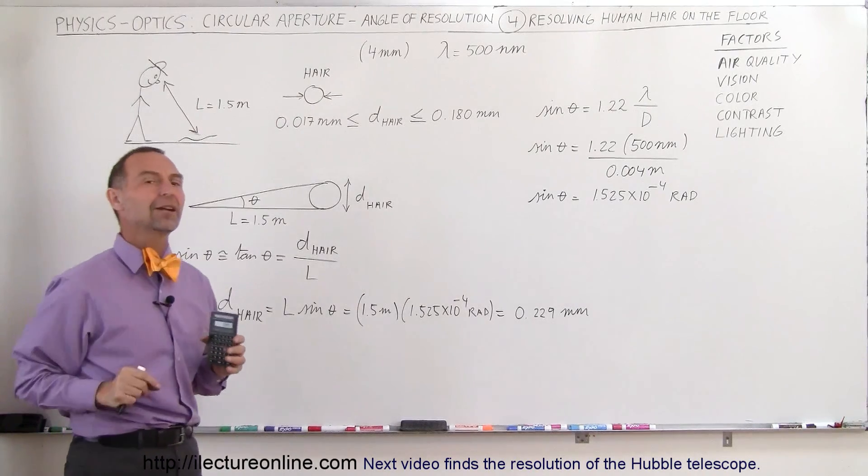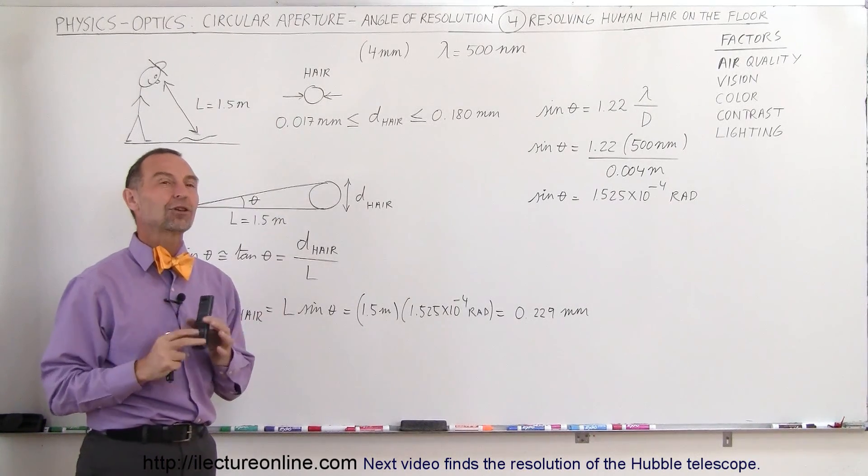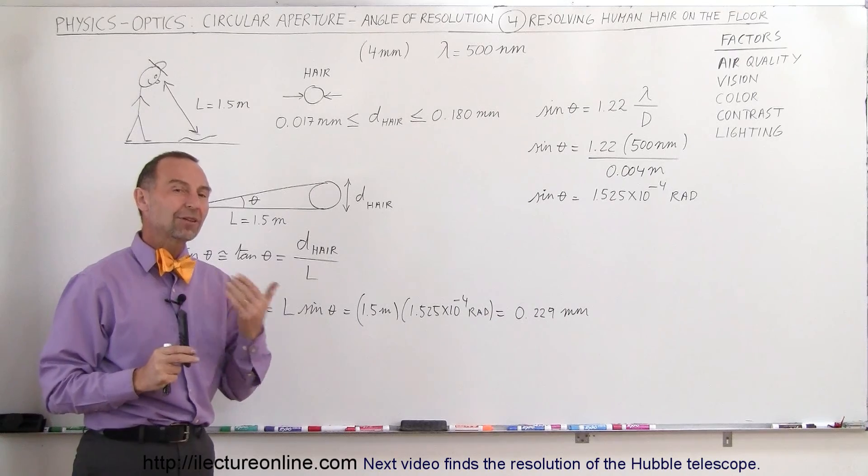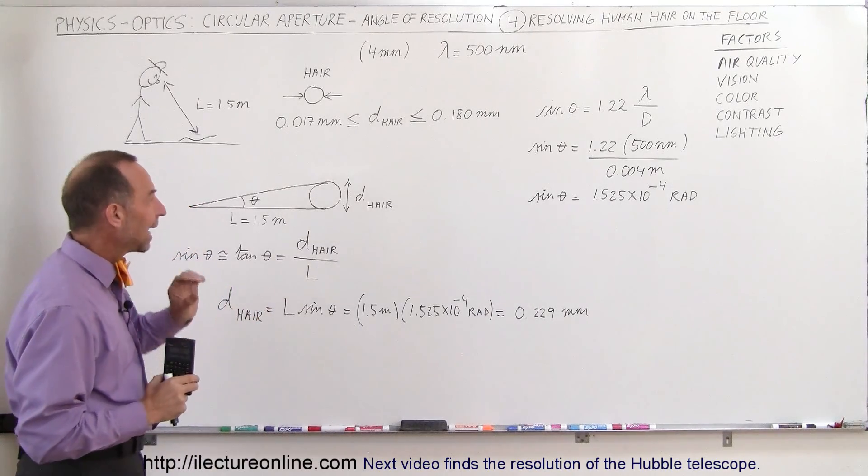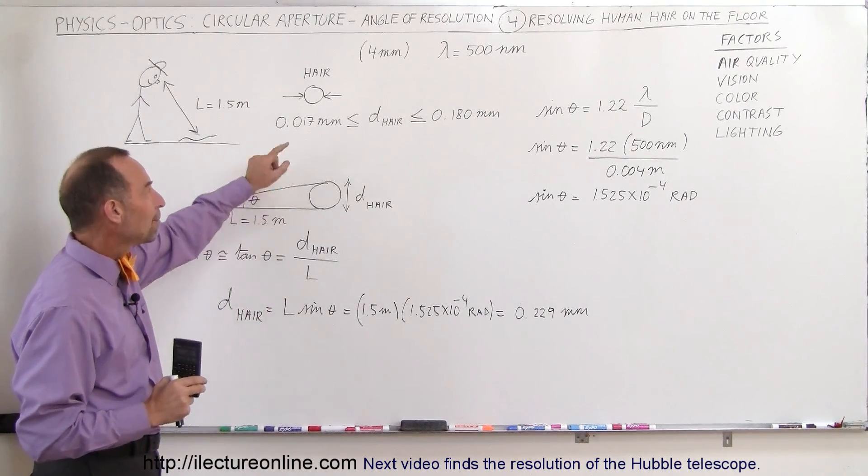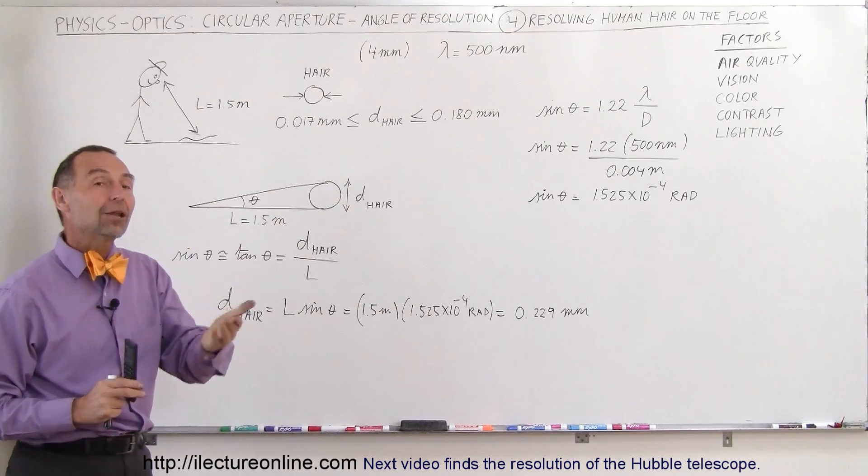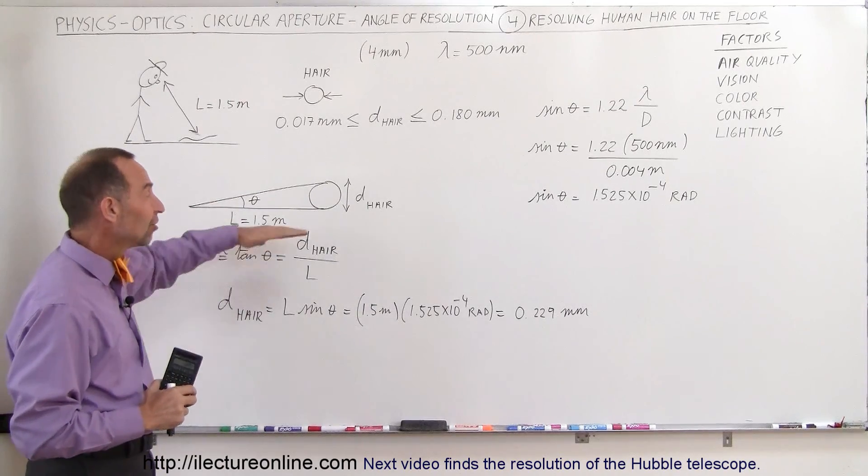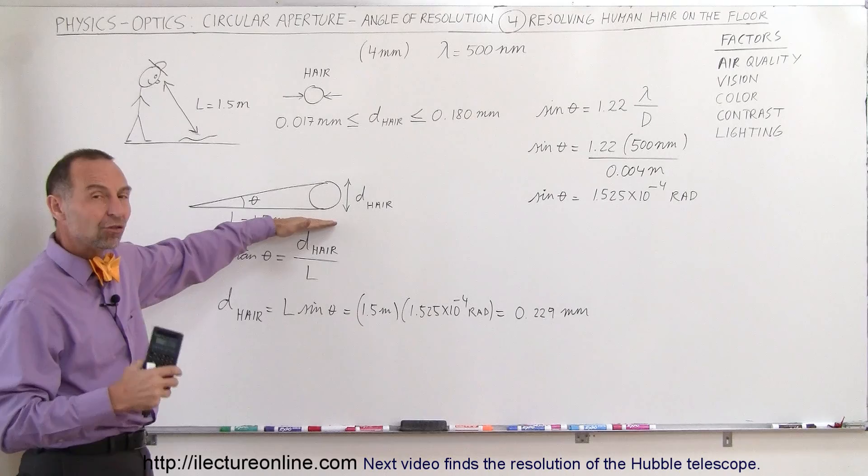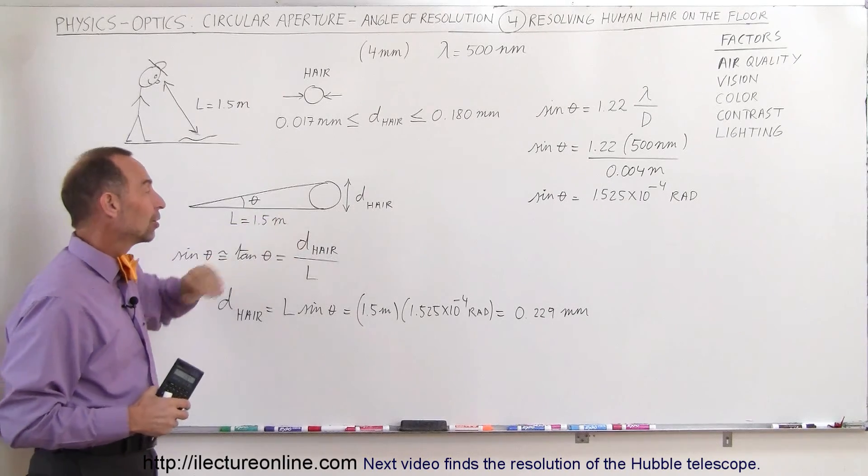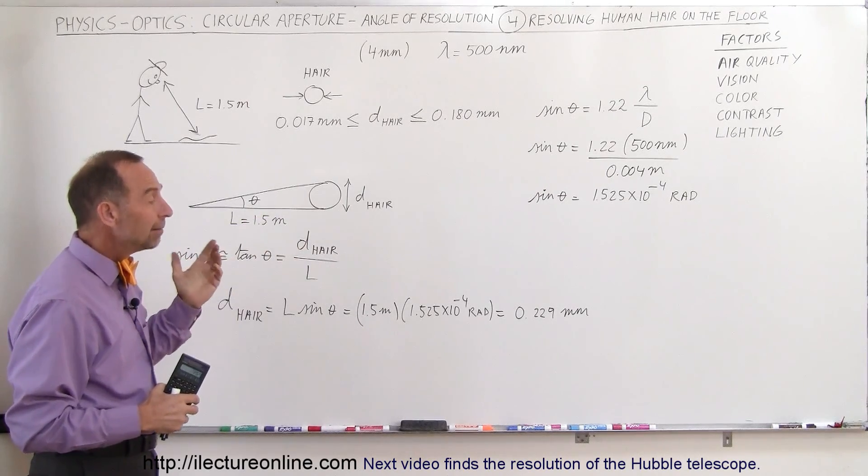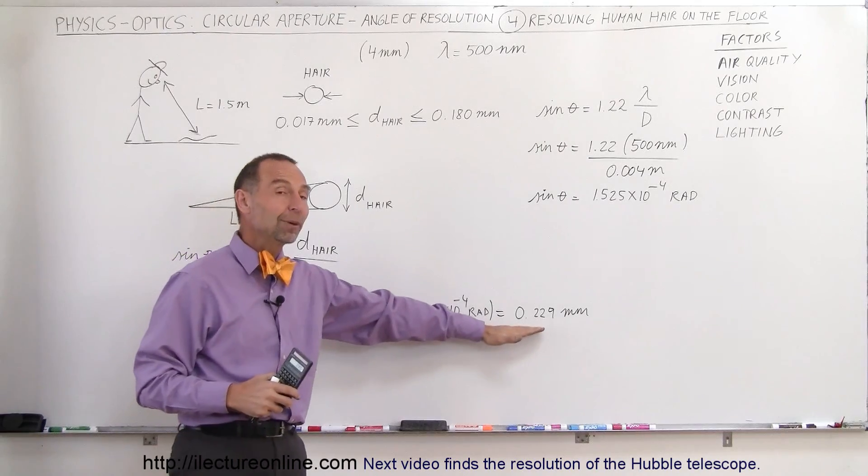Human hair on the floor from where we're normally standing is beyond our ability to typically resolve. You might say, wait, I've seen hair on the floor, and that's true. The Rayleigh criterion shows we can actually resolve better than this angle. This is a good approximation to what we can resolve with the human eye, and we cannot do much better than that.